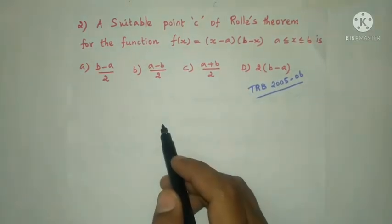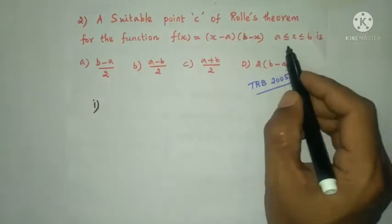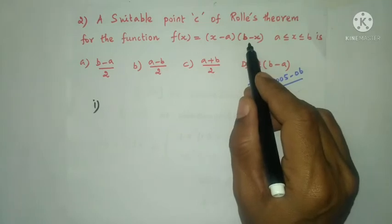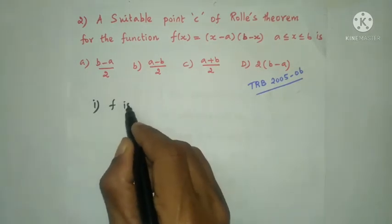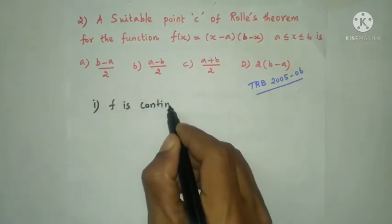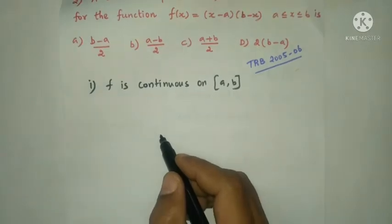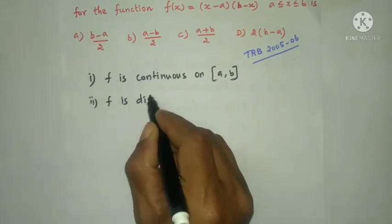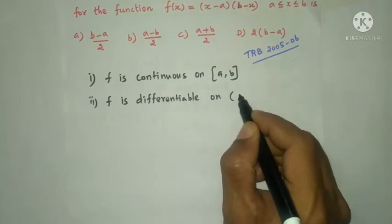Checking Rolle's theorem conditions. First condition: f(x) is continuous on the closed interval [a, b] — since f(x) is a polynomial function, every polynomial function is a continuous function. Second condition: f is also differentiable on the open interval (a, b). Third condition: f(a) = f(b).